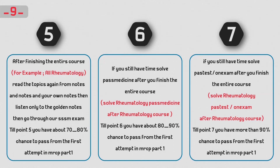Differential diagnoses include septic arthritis — infection of the joint — in which involvement of the metaphysis is rare, in contrast to osteomyelitis. Ewing's sarcoma should also be considered; on X-ray it shows lytic bone lesions and an onion-skin appearance of the periosteum.